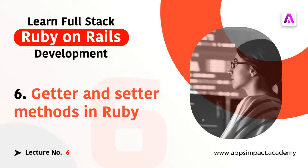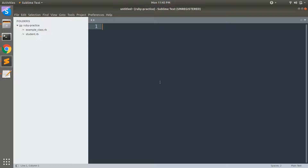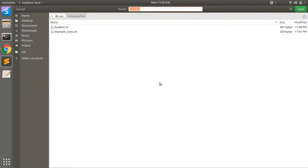The getter method is a method that gets or retrieves the value of an instance variable. Without a getter method, you cannot retrieve the value of an instance variable outside the class it was instantiated from. The name of a getter method is the same as the name of the instance variable, and it requires no argument because it is used only to retrieve the value.